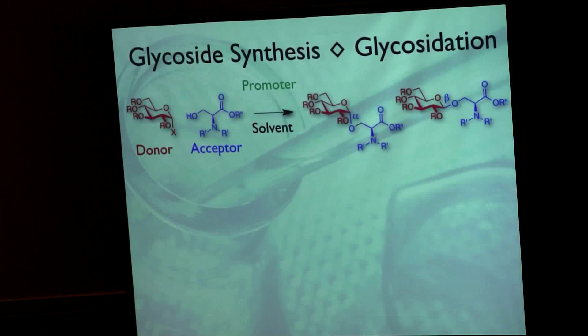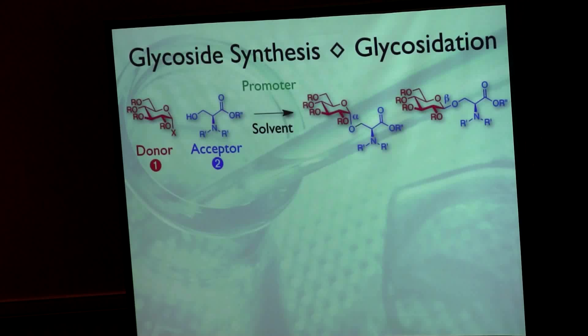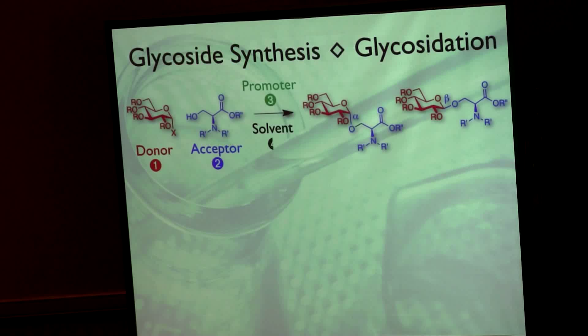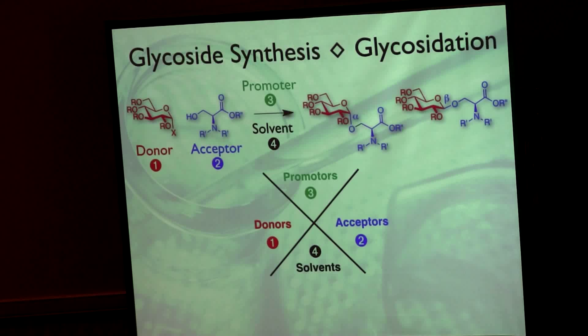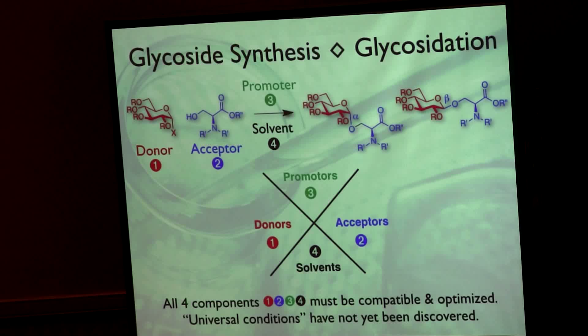Essentially these are starting materials to make glycopeptide pharmaceuticals. But glycosylation, if you're not too familiar with it, you have a donor, you have an acceptor, typically an alcohol or another sugar, a promoter—and they're usually called promoters rather than catalysts because you need a lot of them—and a solvent. The tricky part is that all four of these components really have to be optimized and work together to get effective glycosylations.